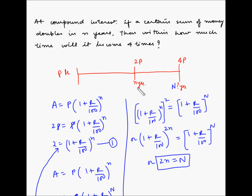For example, if n was equal to 4 years, then capital N would be equal to 2 times 4, which is 8 years.